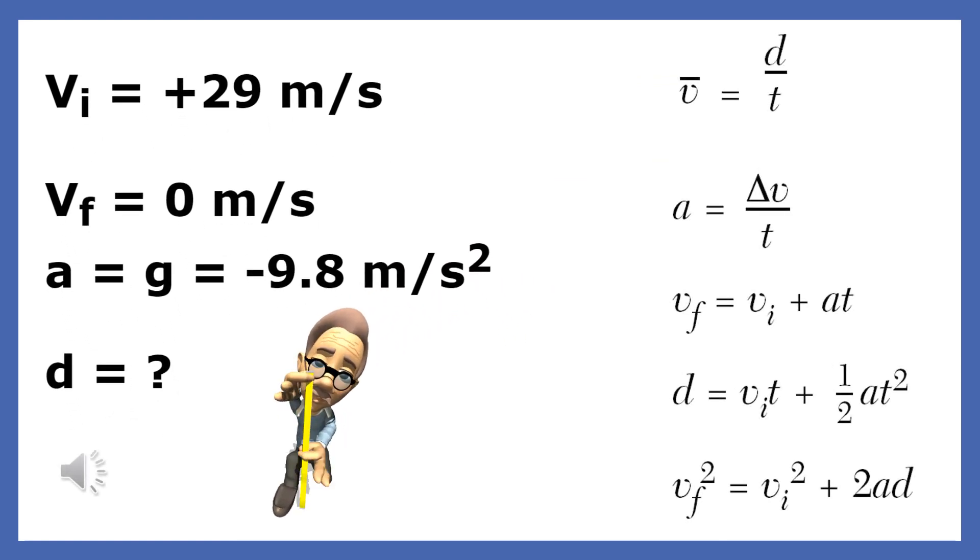Once we have isolated our data and unknown, we scan the equation list on our reference table until we find an equation that has all four of our variables.